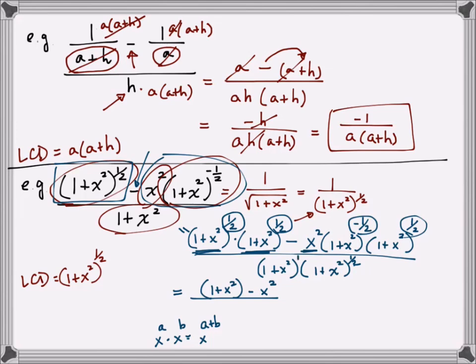So I have (1 plus x squared) to the 3/2 in the denominator. Simplifying the top: I have (1 plus x squared) minus x squared, and the x squared terms cancel, leaving just 1 on top. On the bottom I have (1 plus x squared) raised to the 3/2 power. That's the simplest I can get, and that is my final answer.